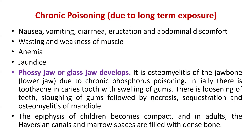Initially, phossy jaw presents with toothache in carious teeth and swelling of gums, followed by loosening of teeth, sloughing of gums — meaning peeling of the skin of the gums — necrosis, and osteomyelitis of the mandible. The epiphysis of children becomes compact, and in adults the Haversian canals and marrow spaces are filled with dense bone. These are characteristic findings of chronic phosphorus poisoning.